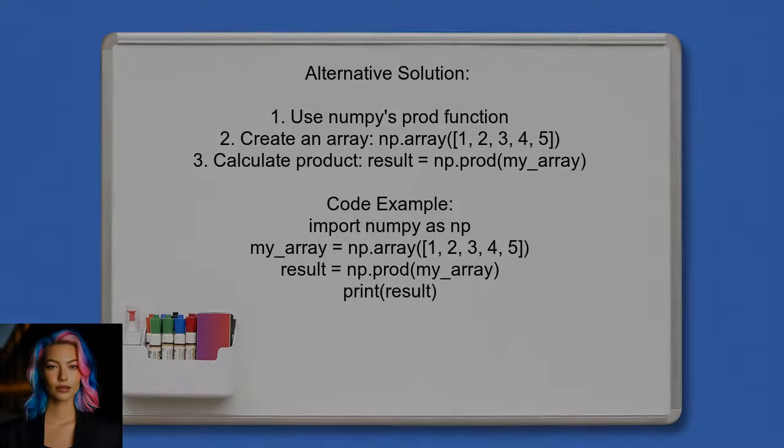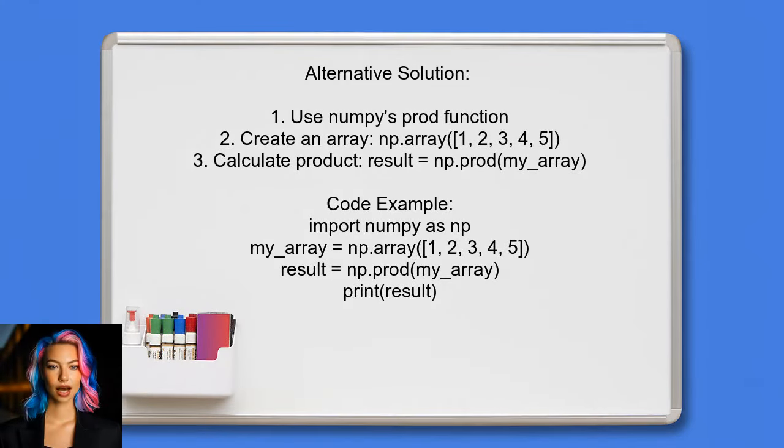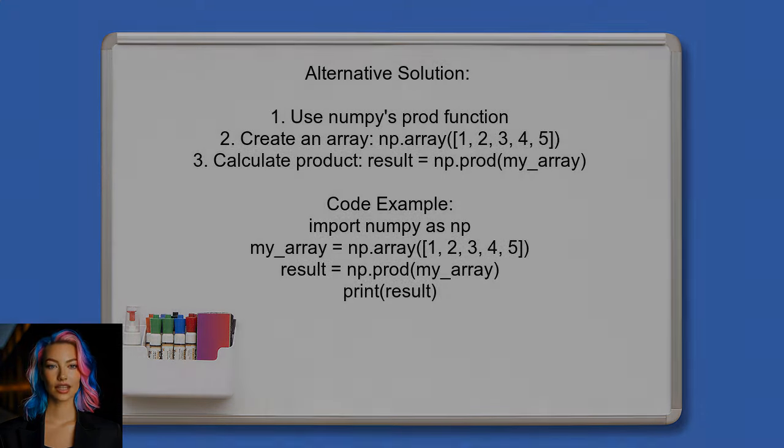An alternative solution provided by a user suggests using the NumPy library's prod function. This function calculates the product of all elements in an array efficiently. For example, you can create an array with the values 1 through 5 and then call np.prod on it to get the result of 1 times 2 times 3 times 4 times 5.